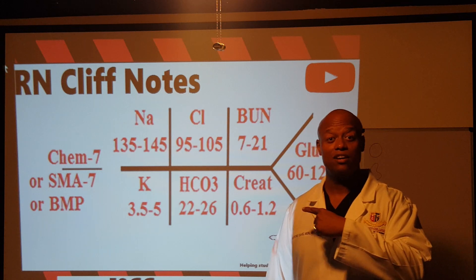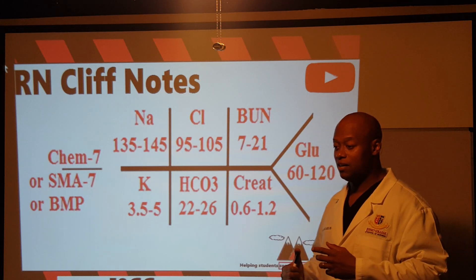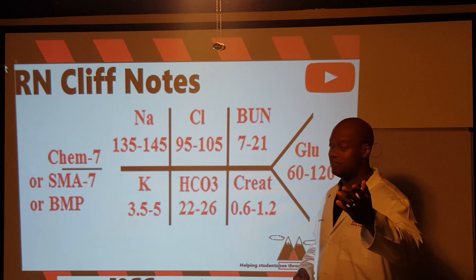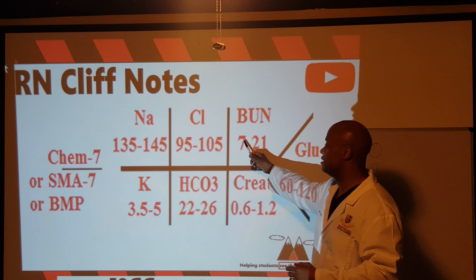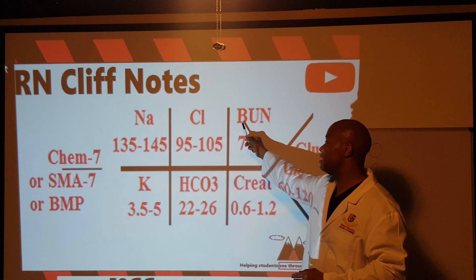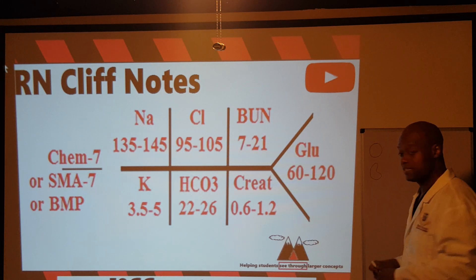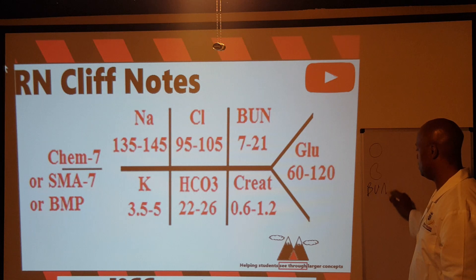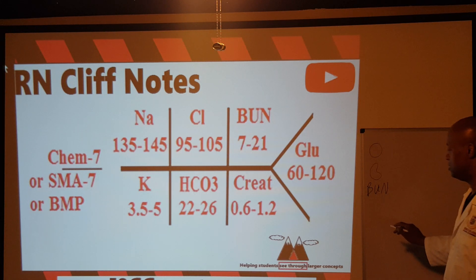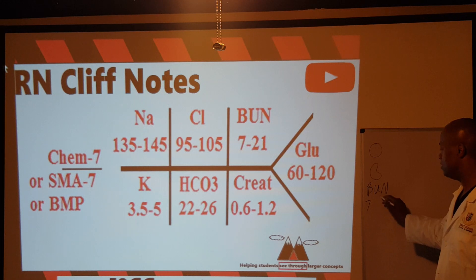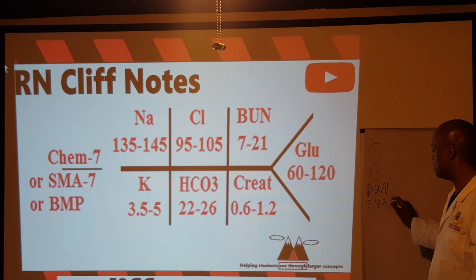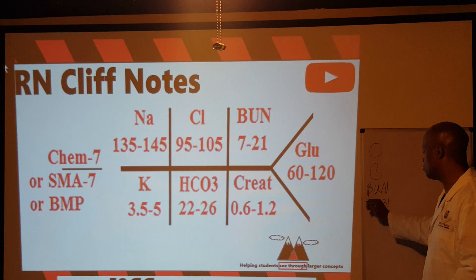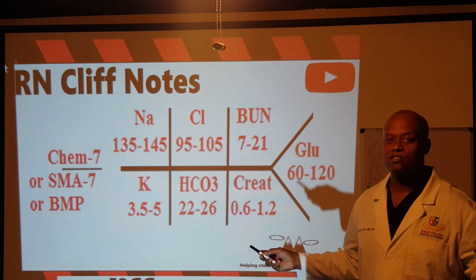BUN — blood, urea, and nitrogen — as we mentioned earlier. We're looking at three letters: B, U, N — that's a magic number. We're assigning seven to each one of those letters, so seven plus seven plus seven equals twenty-one. Therefore, BUN's range is 7 to 21. Super easy, using our magic numbers: three for the letters, and seven.